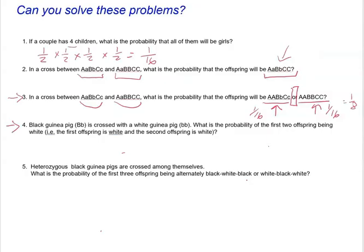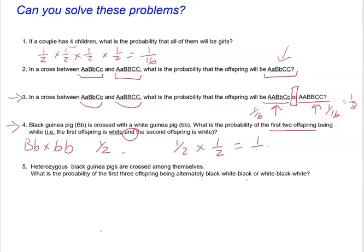Problem number four: we have a black guinea pig represented by big B little b, crossed with a white guinea pig, little b little b. We want to know the probability of the first two offspring both being white. First, find the probability of a single white offspring. Crossing big B little b with little b little b, we see the probability for little b little b is one half. To get two white offspring in a row, we multiply: one half × one half = one fourth. That's the probability of two offspring being white.